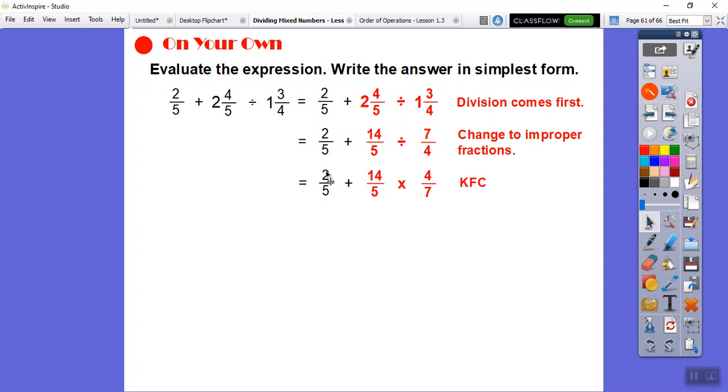Is there anything that can cancel? Yes. 7 goes into 7 once, 7 goes into 14 two times. So I divided those by 7. And then we can multiply. 2 times 4 is 8, 5 times 1 is 5. So that becomes 8 fifths.